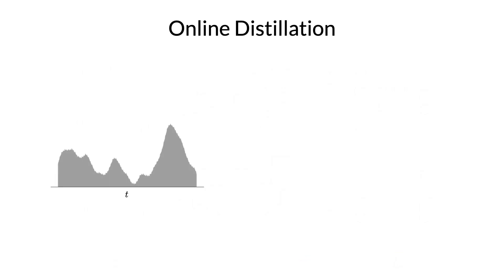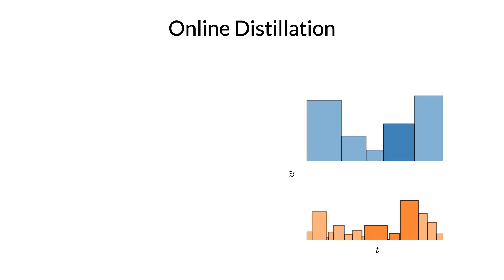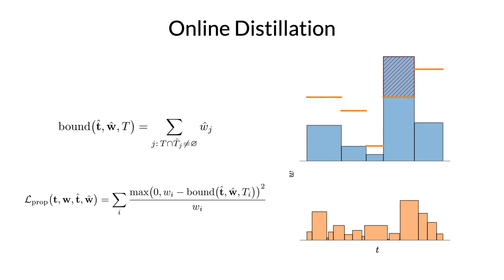To train this model, we need a loss function that encourages NERF histograms to be consistent with Proposal histograms. On the left we have some true 1D distribution, and on the right we have two histograms of that distribution. Because these two histograms are both summaries of the same underlying distribution, we can make strong assertions about how they must relate to each other. For example, the weight of a highlighted bin must be no more than the sum of the bin weights that overlap with it in the histogram below. With this fact, we can construct an upper bound on the weights of one histogram using the weights of the other. So during training, we impose a loss on the histograms produced by the two MLPs that penalizes any violation of this bound, shown here in red. This encourages the Proposal MLP to predict an upper envelope of the scene geometry predicted by the NERF MLP.